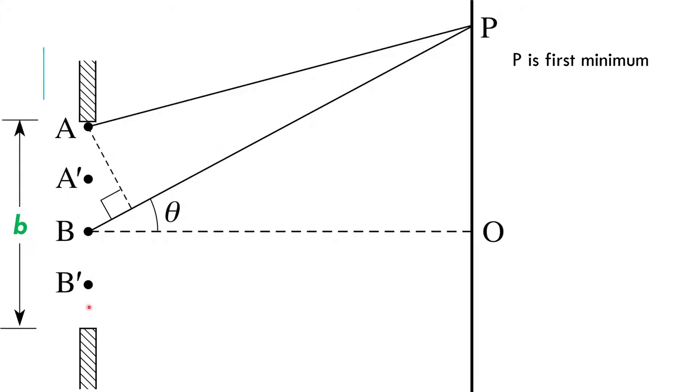And so if every wavelet has an accompanying wavelet halfway down the slit, then even if there's quote-unquote infinity of them, they will all cancel out with their partner, and at P I will get total destructive interference. That's the concept.